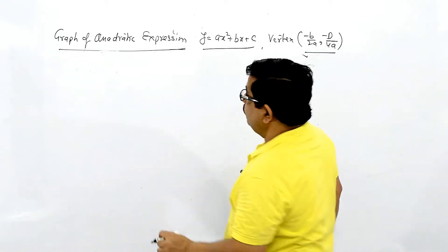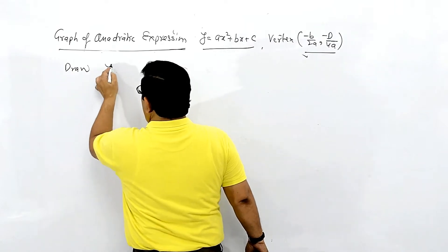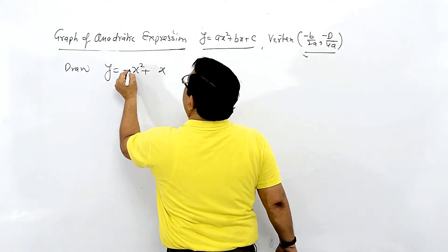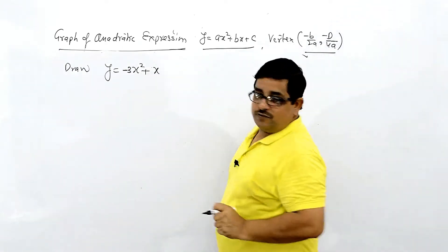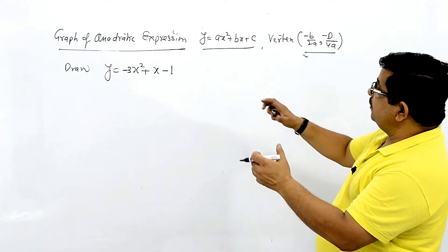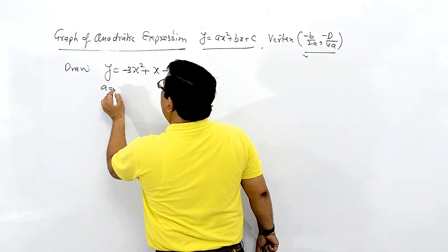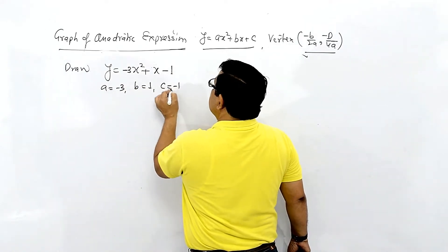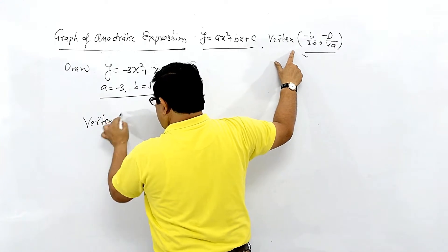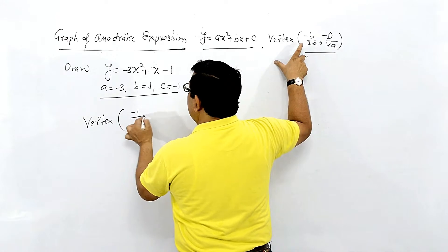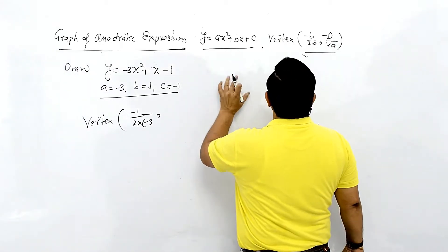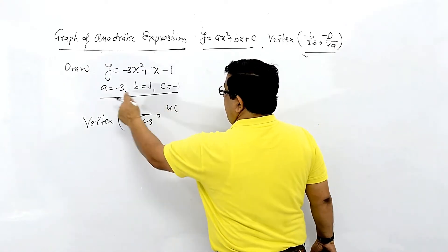Example: draw y = −3x² + x − 1. We have a = −3, b = 1, c = −1. The vertex is at x = −b/2a = −1/(2×−3) = 1/6. For the y-coordinate, we use −D/4a, where D = 4ac − b² = 4×(−3)×(−1) − 1² = 12 − 1 = 11.